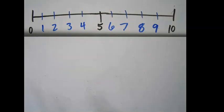Let's say that I have a number line. This number line goes from zero to 10. The number exactly in the middle of zero and 10 is five.